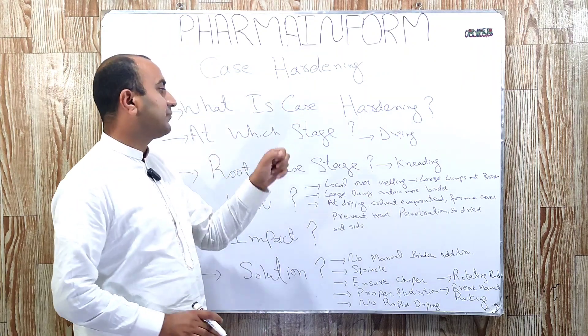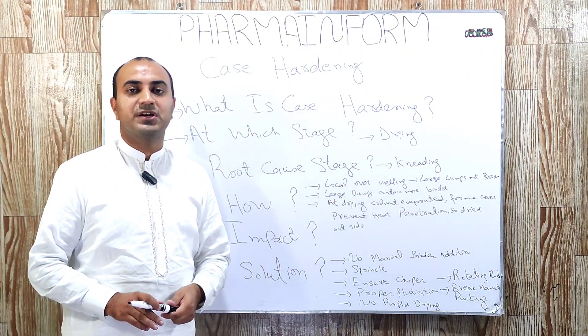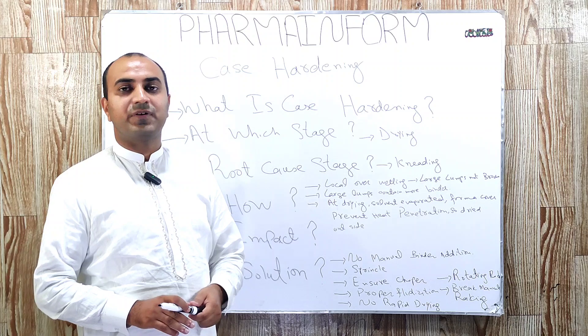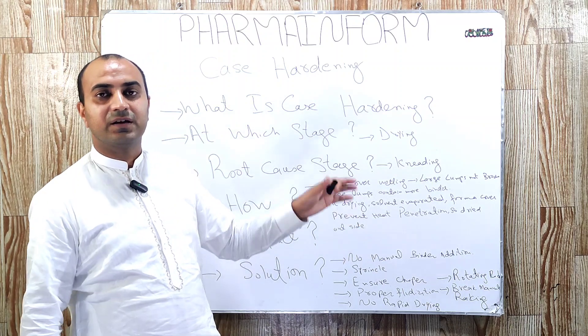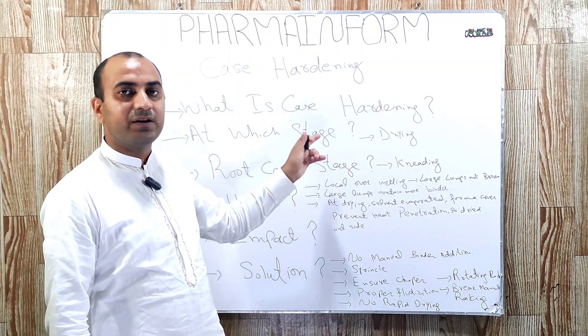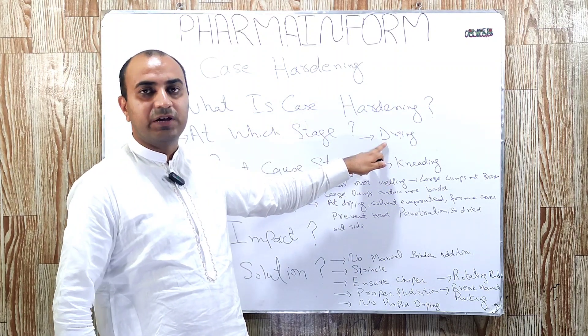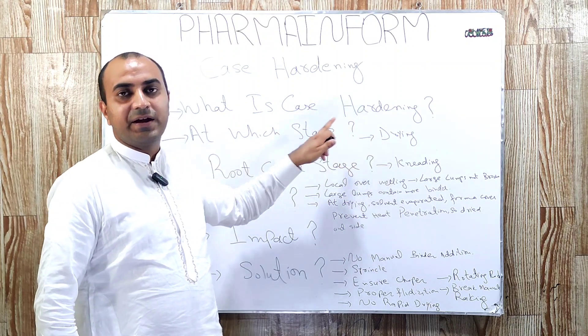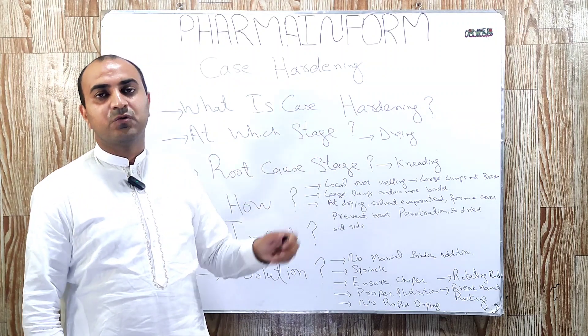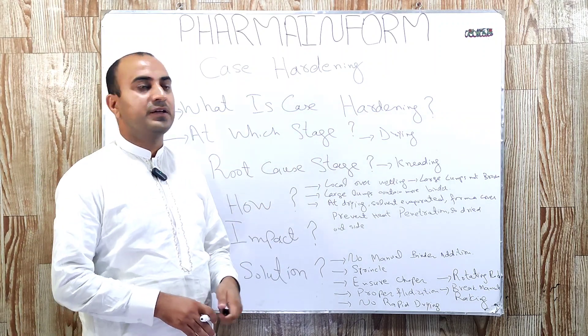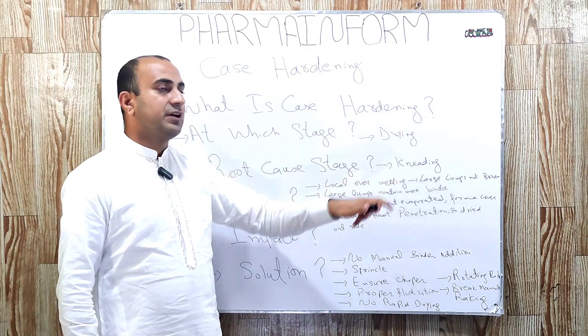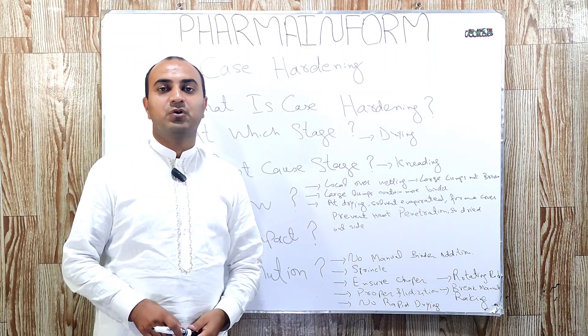At which stage does the case hardening defect occur? Case hardening defect occurs at the stage of drying, and the root cause stage of case hardening is kneading.